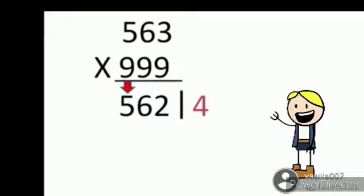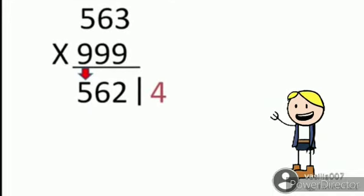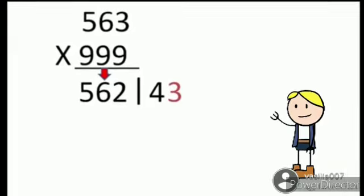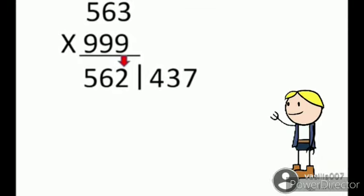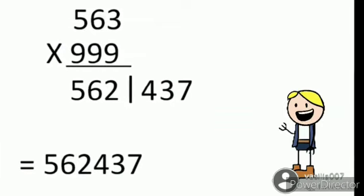And then subtract the first number with 9 and write there. That is 9 minus 5. Then do with 6 and 2. We will get 437. Then write 562 and 437, that's our answer.